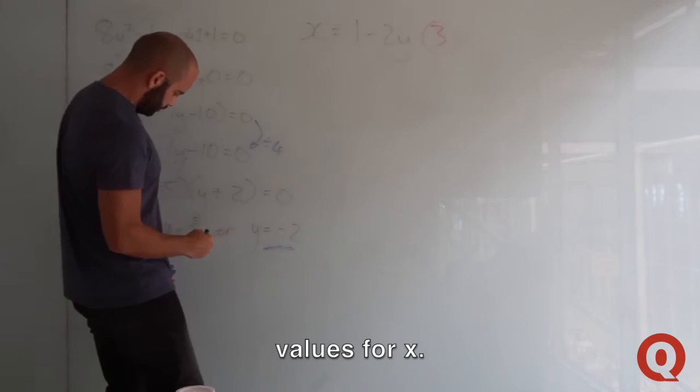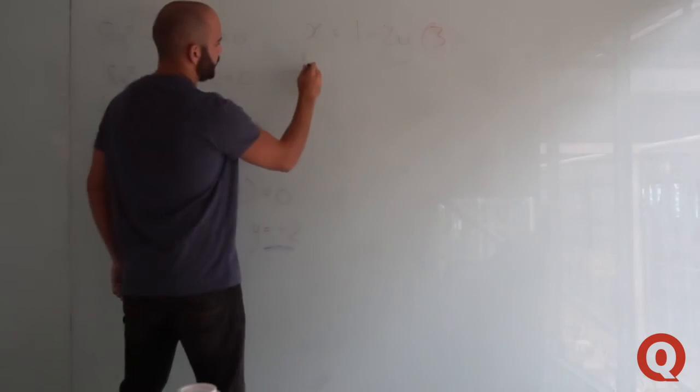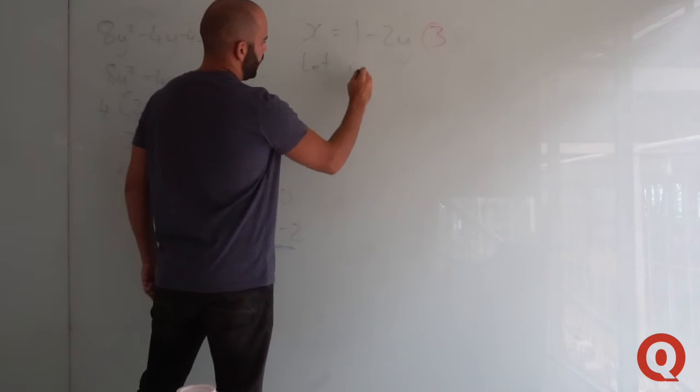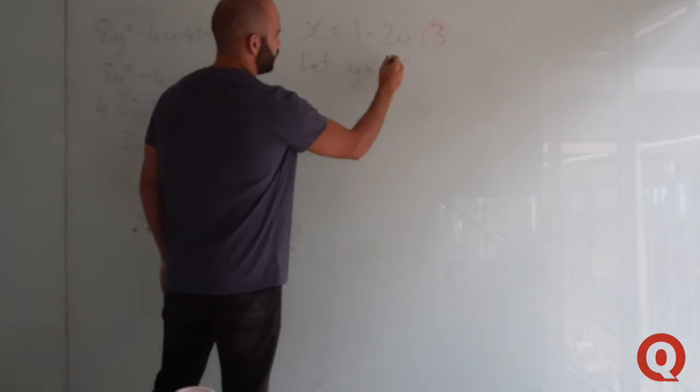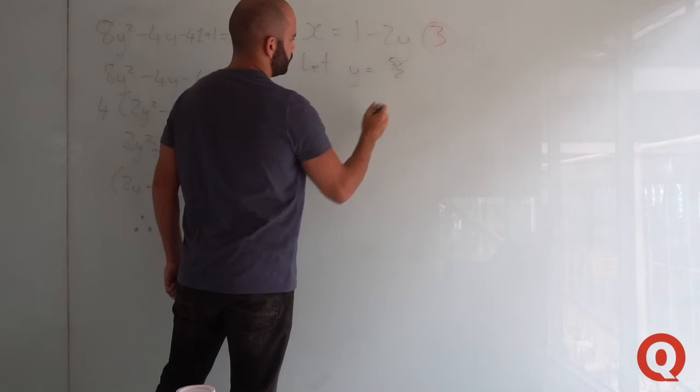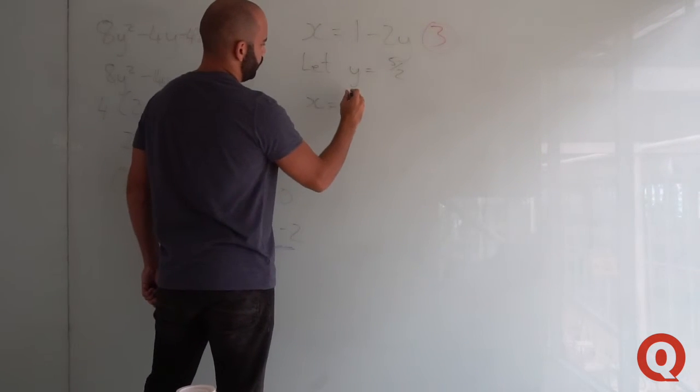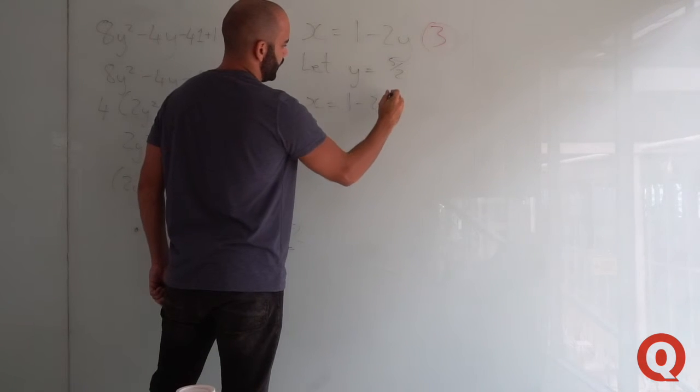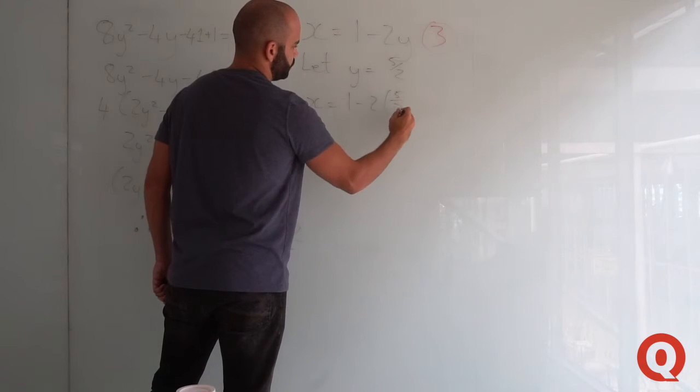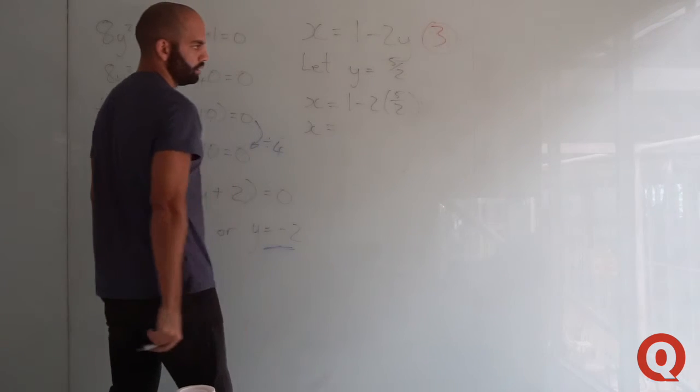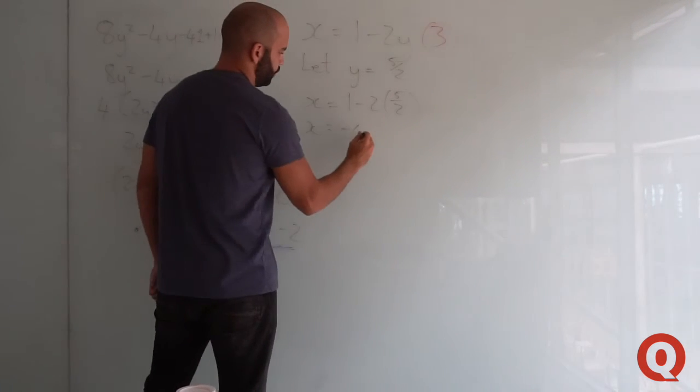Let's take, if you say let y equal 5/2. Substituting back, x equals 1 minus 2 times 5/2, so x equals minus 4.